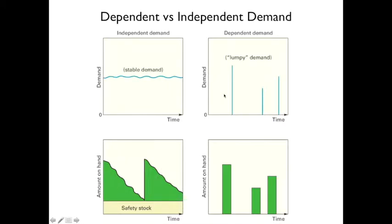This is what's called lumpy demand or dependent demand, where you have an order here, an order here, an order here — or demand. What you actually need on hand varies: at each point you need a specific amount. If that's fairly predictable, you can just order what you need when you need it.